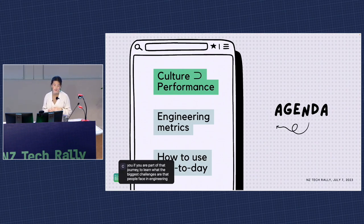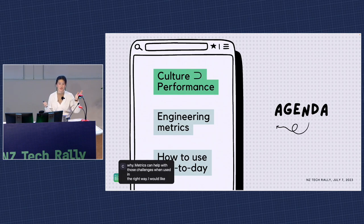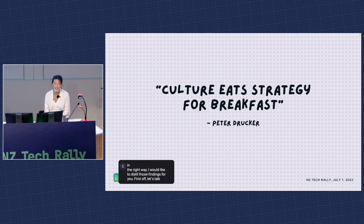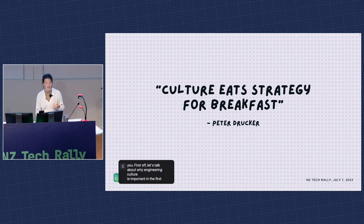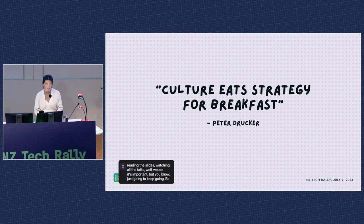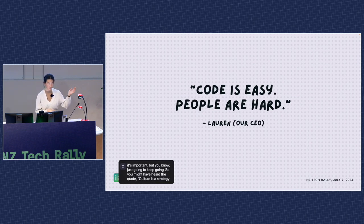First off, let's talk about why engineering culture is important. You might have heard the quote: culture eats strategy for breakfast. It's saying that no matter how great your business strategy is, it's going to fail if you don't have a team culture to back it up with people pulling in the same direction. The same goes for engineering teams. Lauren often says: code is easy, people are hard. The biggest challenges people often face are not technical hurdles — a strong team can work through those. Tech systems are inherently social systems.